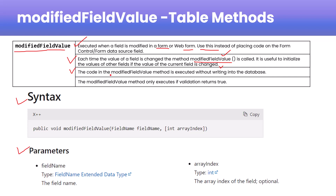The third point is that the code in the ModifiedFieldValue method is executed without writing into the database. This method will not write directly to the database, but it will check if any kind of modification is required before writing. If any validation is required, you can use the ValidateField method. The last point is that ModifiedFieldValue only executes if the validation returns true — meaning the field value is appropriate.